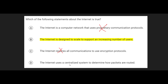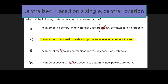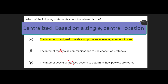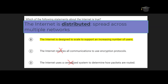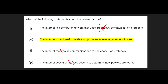Option D is incorrect because the Internet is not a centralized system — the word centralized is what's incorrect. In fact, the Internet uses a distributed system to determine how packets are routed. It is not located in one place; rather, it is a set of distributed networks throughout the world. Centralized would imply there is one big central building where the Internet is held, and that is not the case.